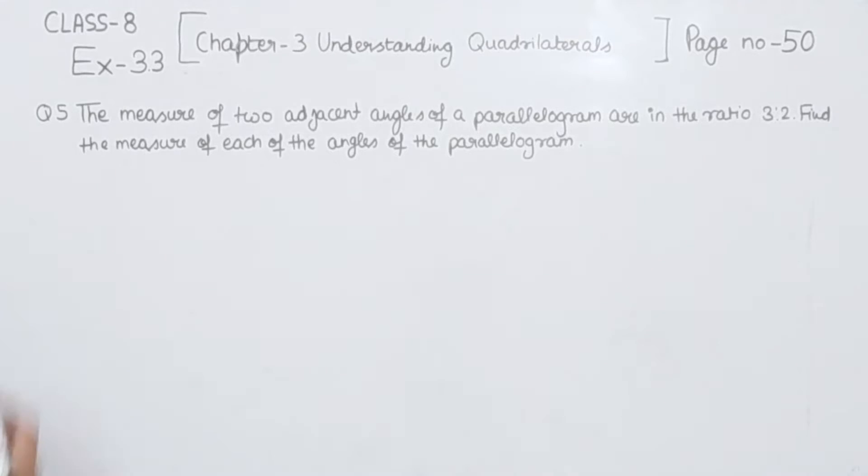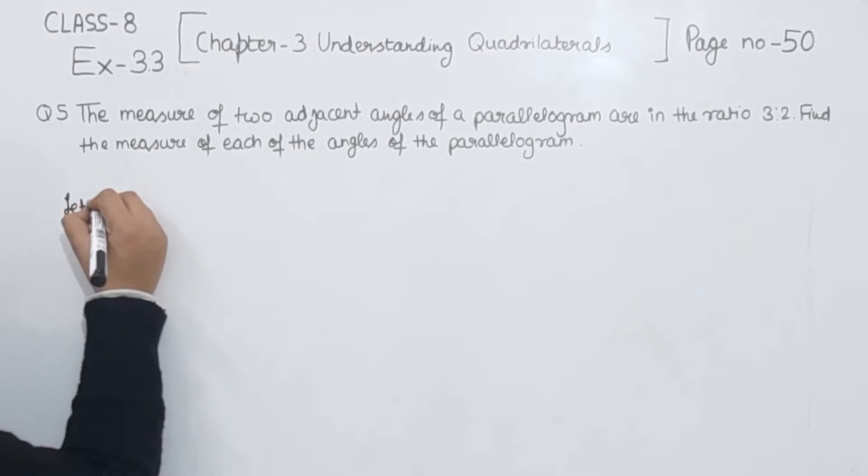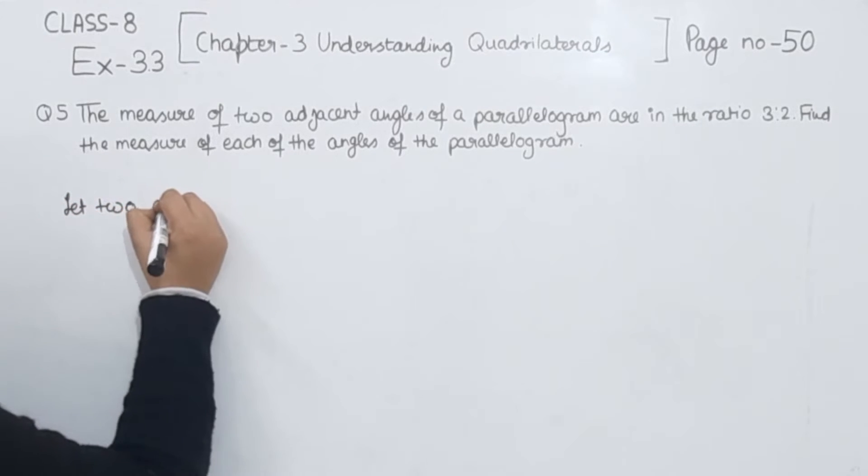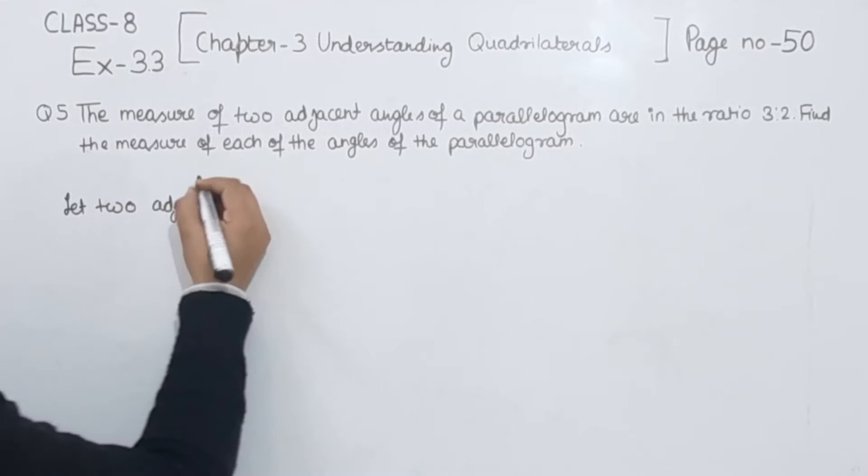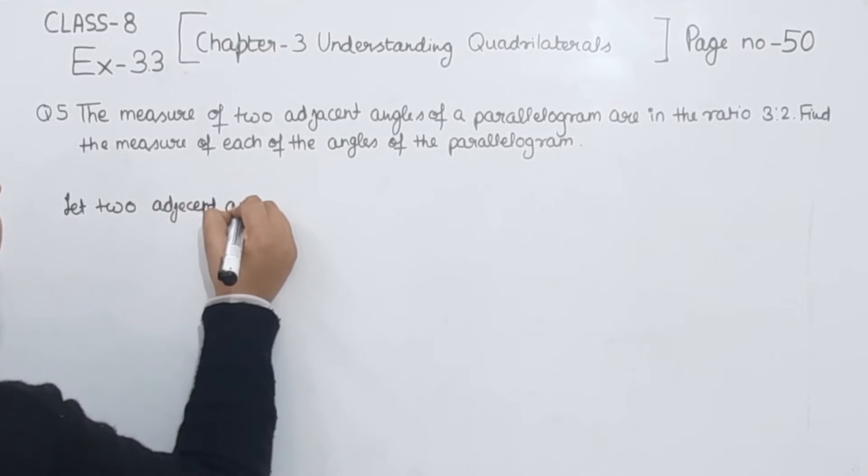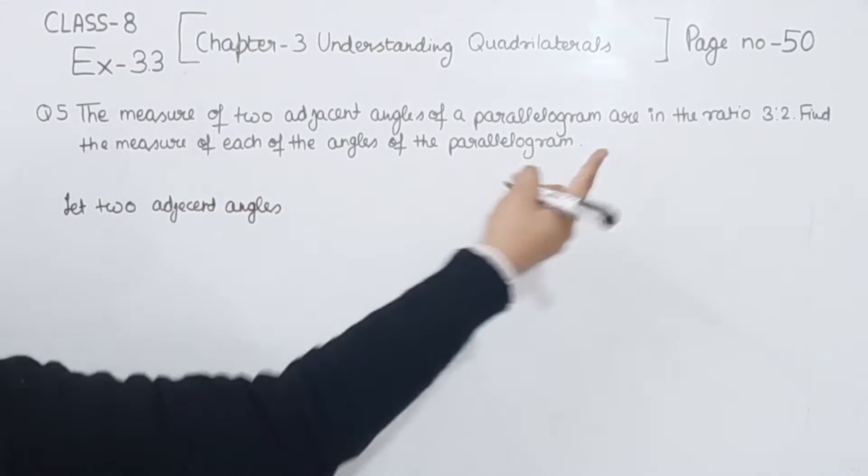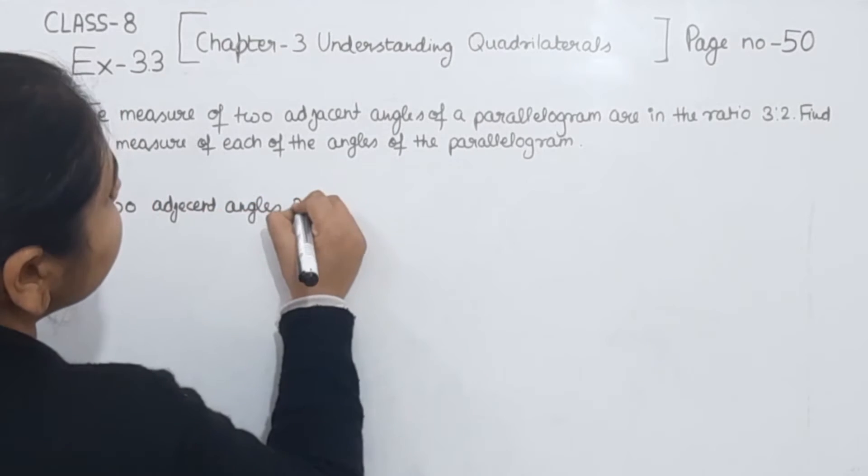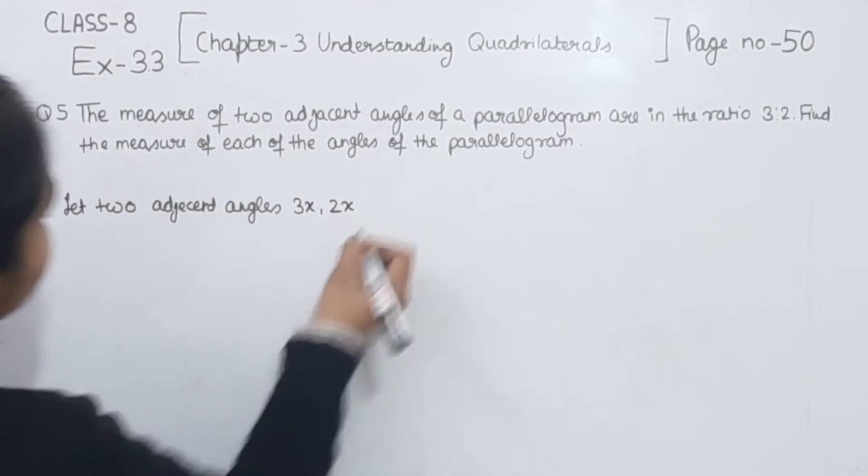So first of all we are going to let two adjacent angles. We are having the ratios 3 is to 2, so I am going to write here 3x and 2x.